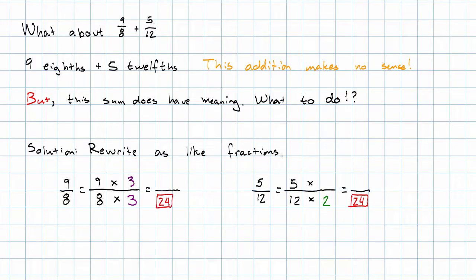If I multiplied my denominator by 3, I've got to do the same thing to the numerator. If I multiplied my denominator by 2, I have to do the same thing to the numerator. So my original addition problem can be rewritten as 27 twenty-fourths plus 10 twenty-fourths. These are now the same kind of thing, so it makes sense to add them. 27 plus 10 is 37. So I get 37 twenty-fourths.